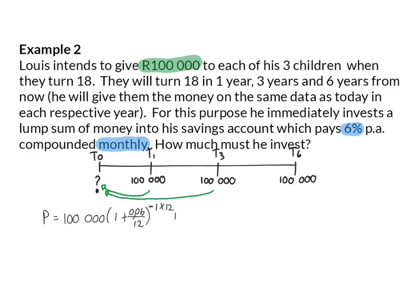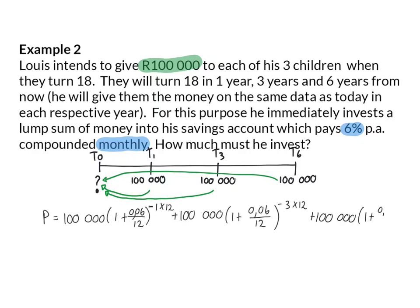Next, I'm going to take the second 100,000 rand and also move that back to T0. This 100,000 rand has already received three years' worth of interest, so I take my interest of 6% compounded monthly and remove three years' worth of months' interest. Then I finally take the last 100,000 rand back to the beginning, using 6% compounded monthly and removing six years' worth of months' interest. This means that Louis needs to invest 247,585 rand and 27 cents now to ensure that in one, three, and six years' time, he will have 100,000 rand to give each of his three children.